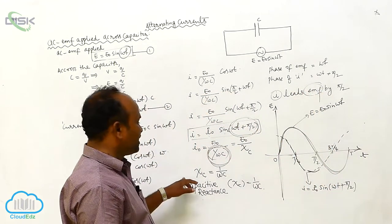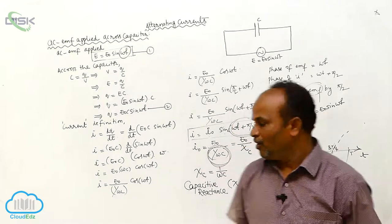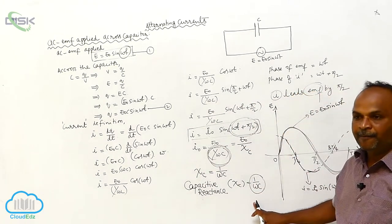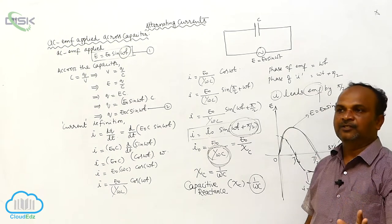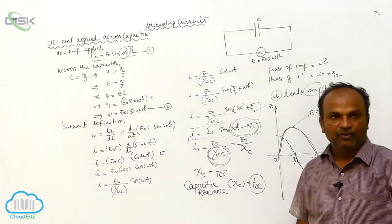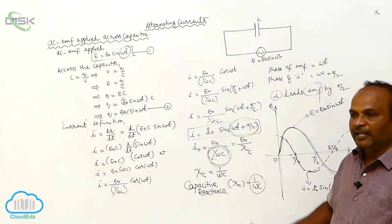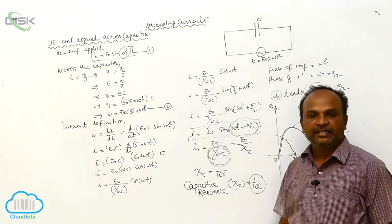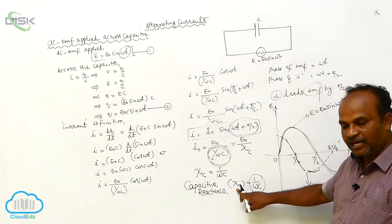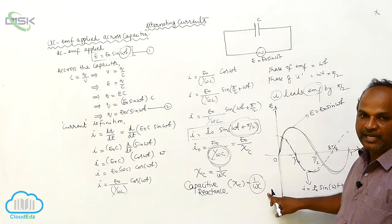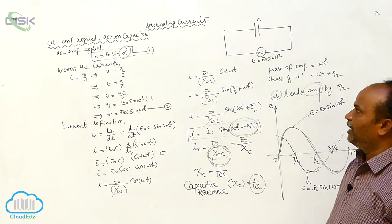The capacitive reactance Xc = 1/ωC. This means the capacitor also offers some resistance to the flow of AC current. The resistance offered by the capacitor for the flow of AC current is called capacitive reactance.